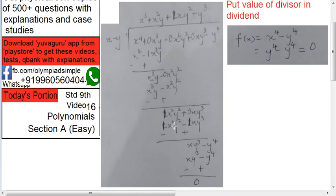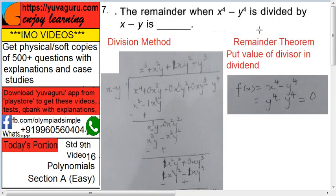This goes to 0, this becomes x y cube. Bring minus y raised to 4 down. Divide this, you get y cube over here. Plus y cube multiply with y, you get y raised to 4 with minus sign, and the answer is 0. Same answer you got with the remainder theorem also. So in exam, try remainder theorem, that's the easiest one.